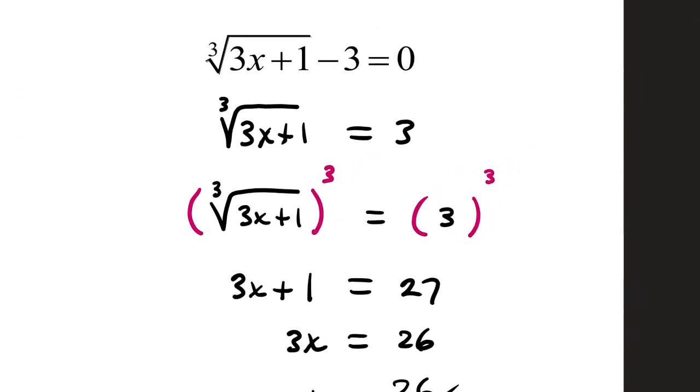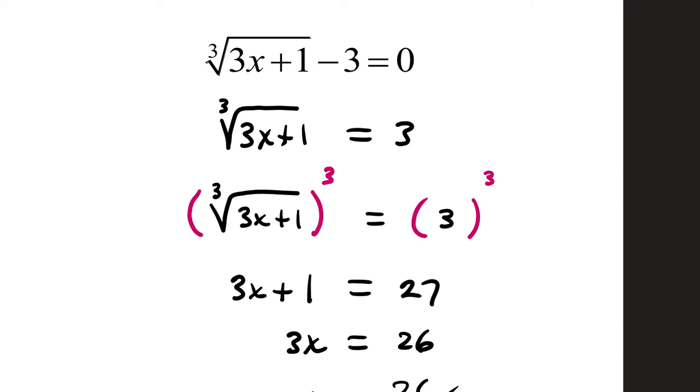The next example, we have a cube root radical. It is not isolated yet, so let's add 3 to both sides. That will isolate the radical term. To remove a cube root radical, you cube both sides of the equation. So raising both sides to the third power, your cube root and cube will cancel, leaving 3x plus 1. 3 cubed is 27. Remember that that's three 3's multiplied together. Subtract 1, you get 26, divide by 3, x equals 26 over 3.